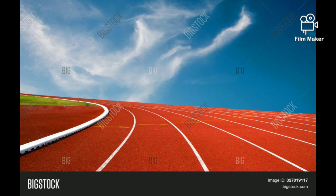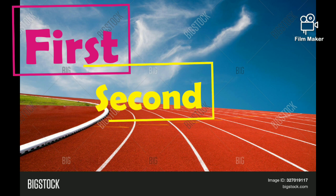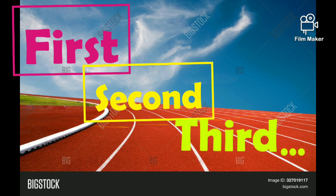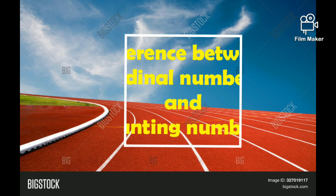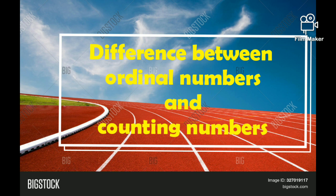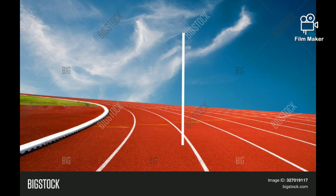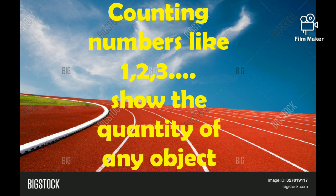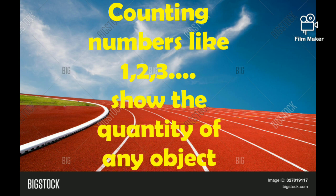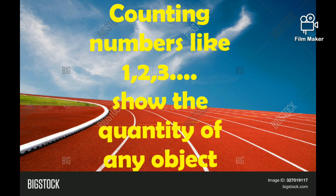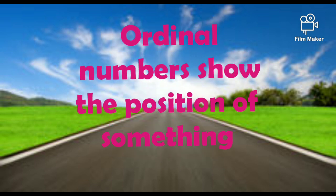I am telling about the position of these cars. That's why I am using Ordinal Numbers like 1st, 2nd, 3rd, etc. What is the difference between Ordinal Numbers and Counting Numbers? Counting Numbers like 1, 2, 3, 4, etc. show the quantity of any object. But Ordinal Numbers show the position of something.